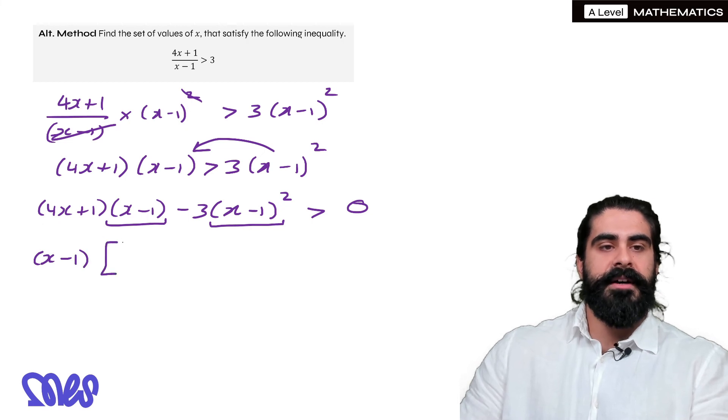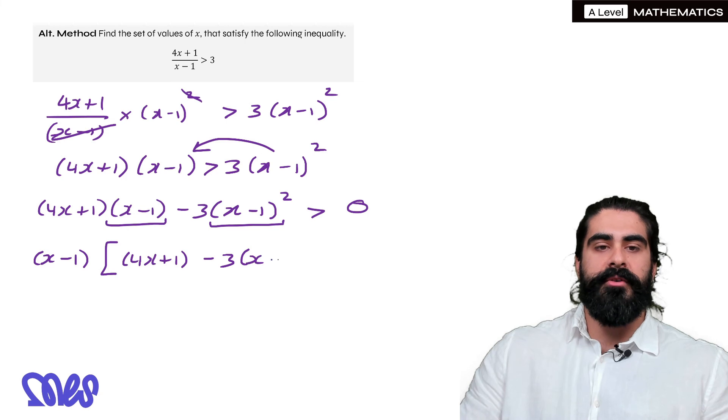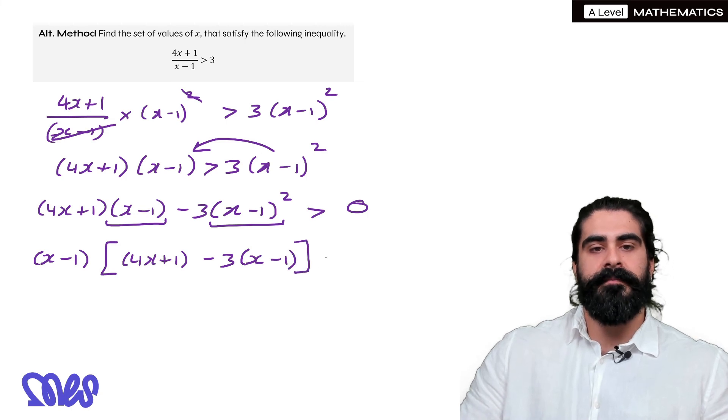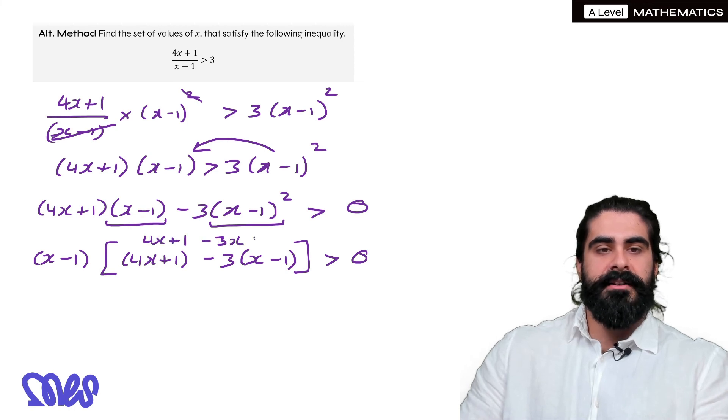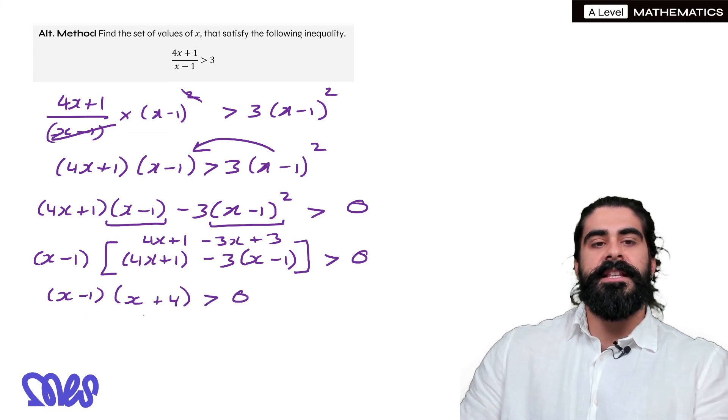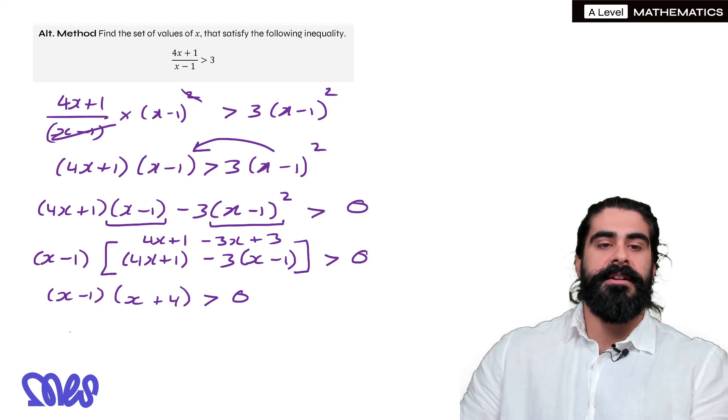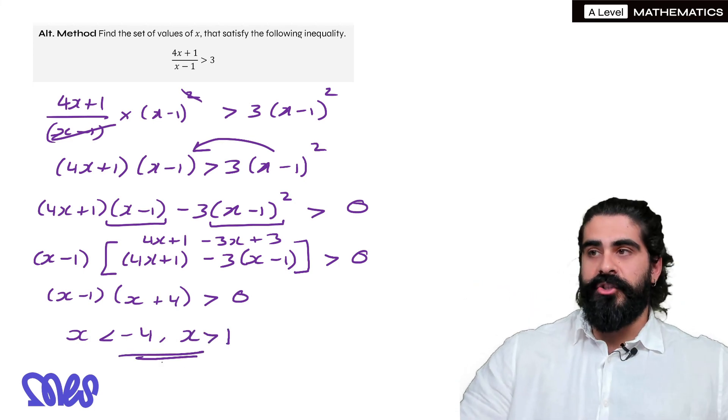What would be left? You would have a 4x plus 1 minus 3, and because it's x minus 1 squared and you've taken out an x minus 1, all that would be left is x minus 1. And then we simplify this. We have 4x plus 1 minus 3x plus 3. So you have x minus 1, 4x minus 3x is just x, and then 1 plus 3 is plus 4. And you can see that gives you the exact same solution as before. You would have x is 1 and x is minus 4. And after the sketch, you get the exact same answer. And it's up to you which method you want to use.